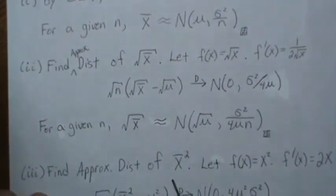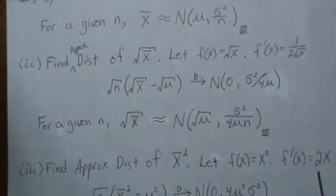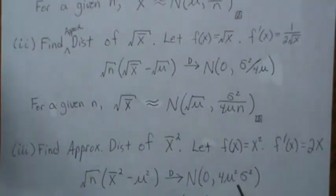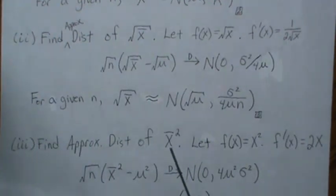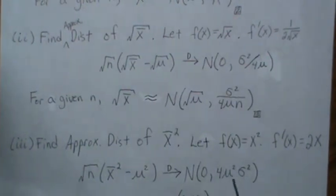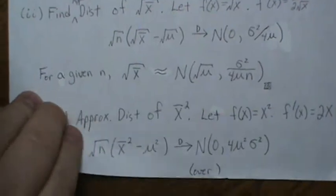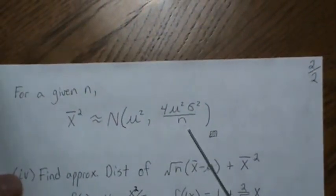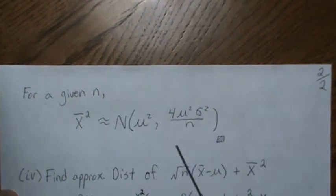Now let's look at the approximate distribution of X-bar squared. Let f(x) = x squared; the first derivative is 2x. If you want more details on the delta method, I have a video called Delta Method where we go into detail and give a proof. To find the approximate distribution of X-bar squared, the delta method says that sqrt(N)*(X-bar² - mu²) has a limiting distribution that's normal with mean zero and variance four*mu²*sigma². Taking the sqrt(N) to the other side and adding mu squared, X-bar squared is roughly distributed as normal with mean mu² and variance 4*mu²*sigma²/N for a given N.